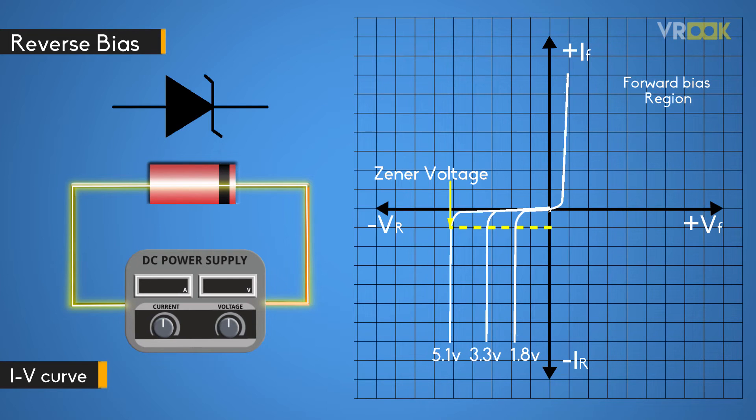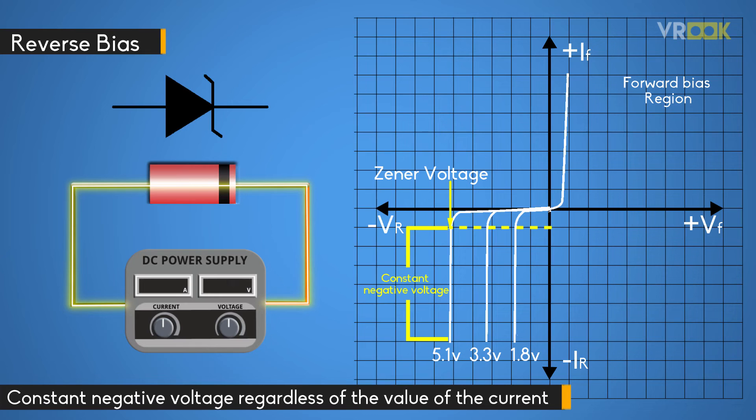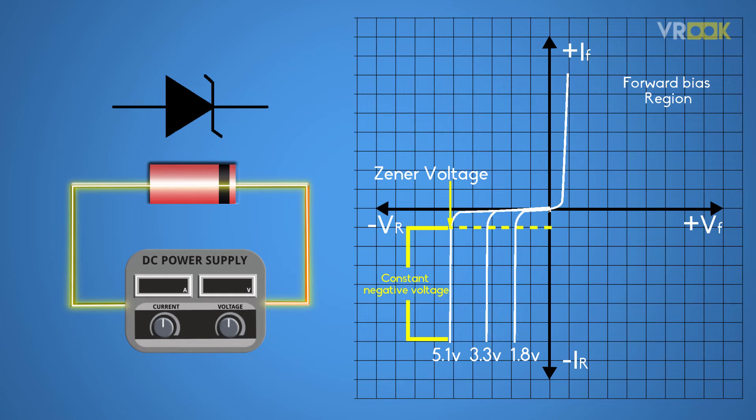From the IV characteristics curve, we can see that the Zener diode has a region in its reverse bias characteristics of almost constant negative voltage regardless of the value of the current flowing through the diode. The voltage remains nearly constant even with large changes in the current.